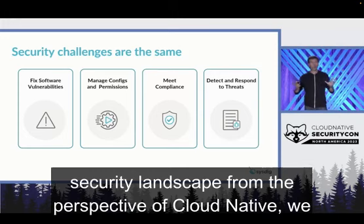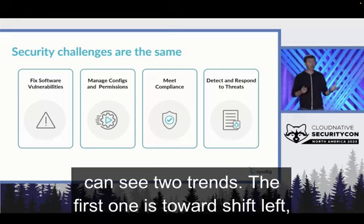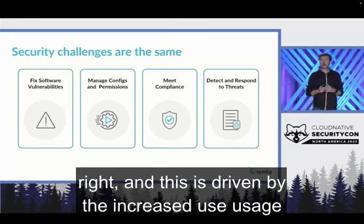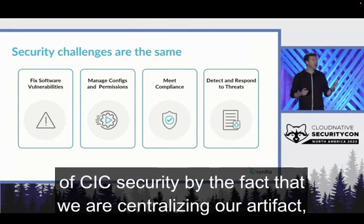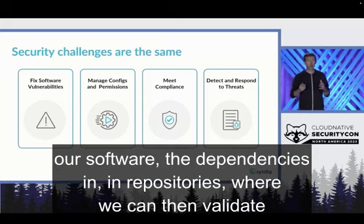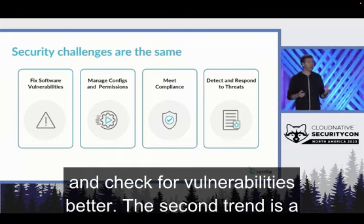When we look at the security landscape from the perspective of cloud native, we can see two trends. The first one is towards shift left. This is driven by the increased usage of CI/CD security, by the fact that we are centralizing our artifacts, our software, and the dependencies in repositories where we can then validate and check for vulnerabilities better.